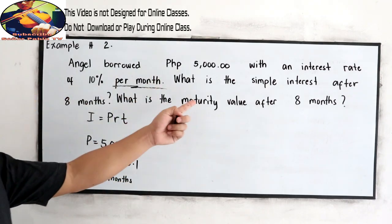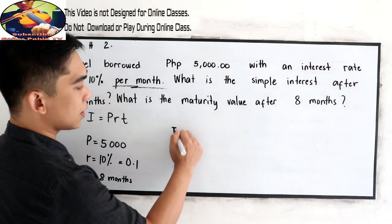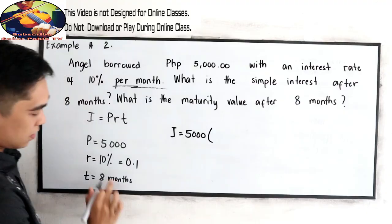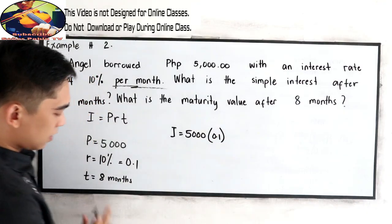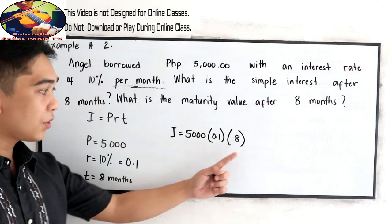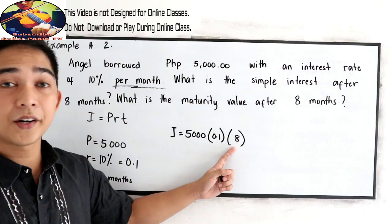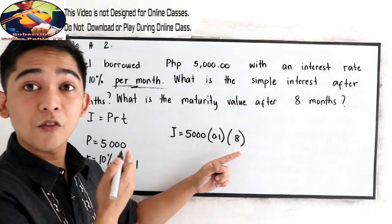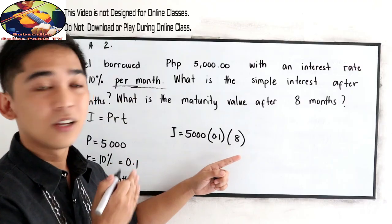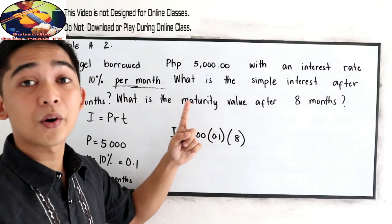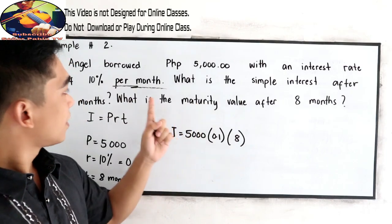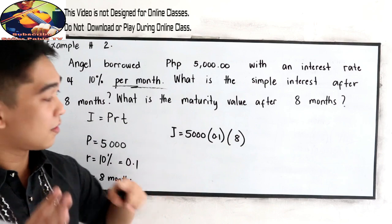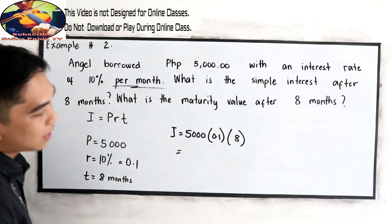Let us find our first question. So substitute interest is P, 5,000 times 0.1 times 8. Notice in this case, we are not going to divide by 12. So unlike our example number 1, we divide it by 12 because our interest rate is annually. In number 2, our case is, or our time is, or our interest rate is monthly. So that's the difference between the two. Now multiply.